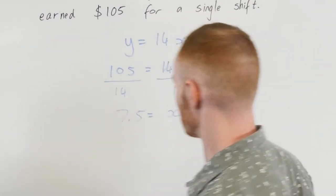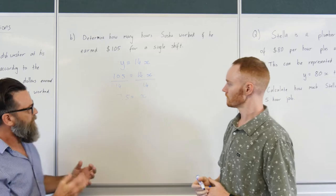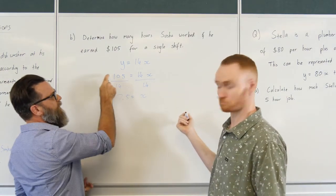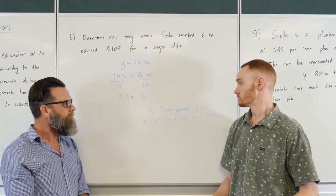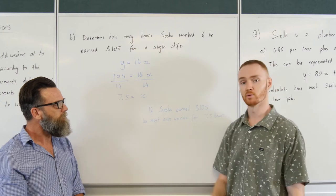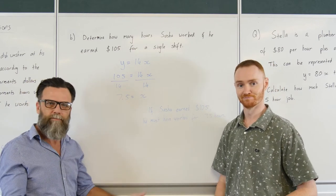So what's that telling you Mr. Wilkie? Well that tells me I think that he's got to actually work seven and a half hours to earn that $105. That's it. So if Sasha earned $105 he must have worked for 7.5 hours. Nice work Sasha.